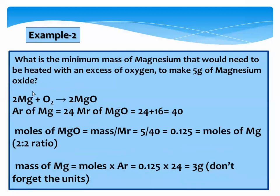End of example. Example number 2: What is the minimum mass of magnesium that would need to be heated with an excess of oxygen to make 5 grams of magnesium oxide? Write the equation: magnesium plus oxygen gives magnesium oxide. 2 moles of magnesium react with 1 mole of oxygen to produce 2 moles of magnesium oxide.